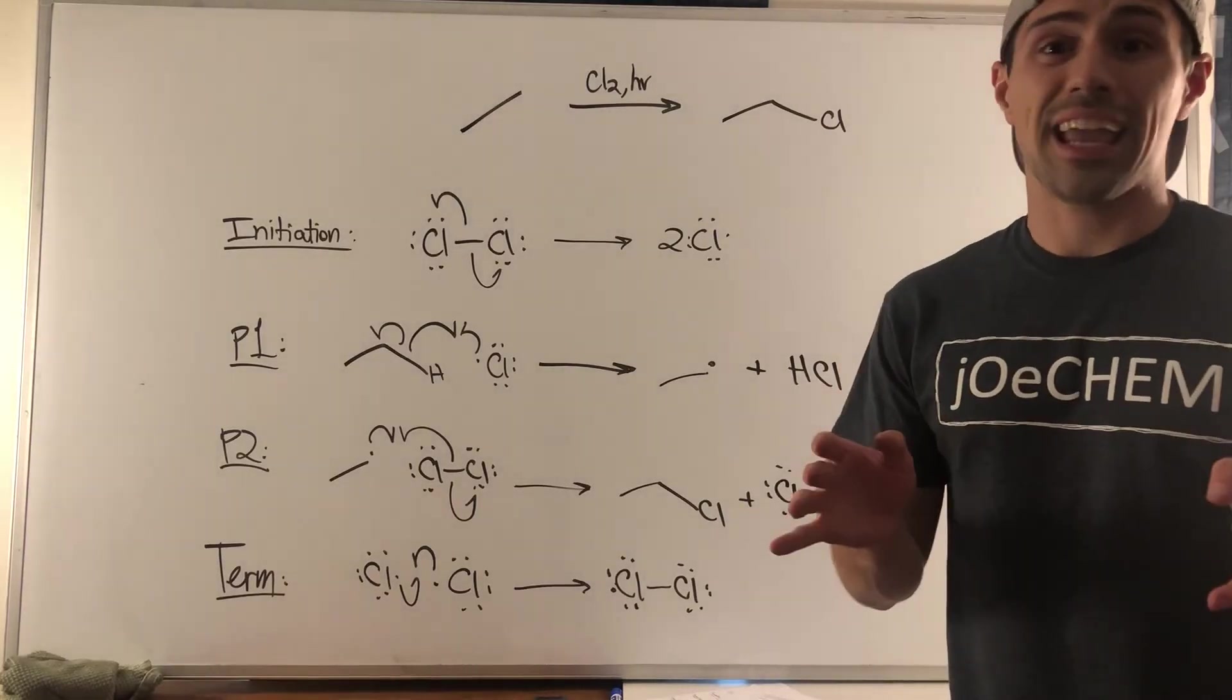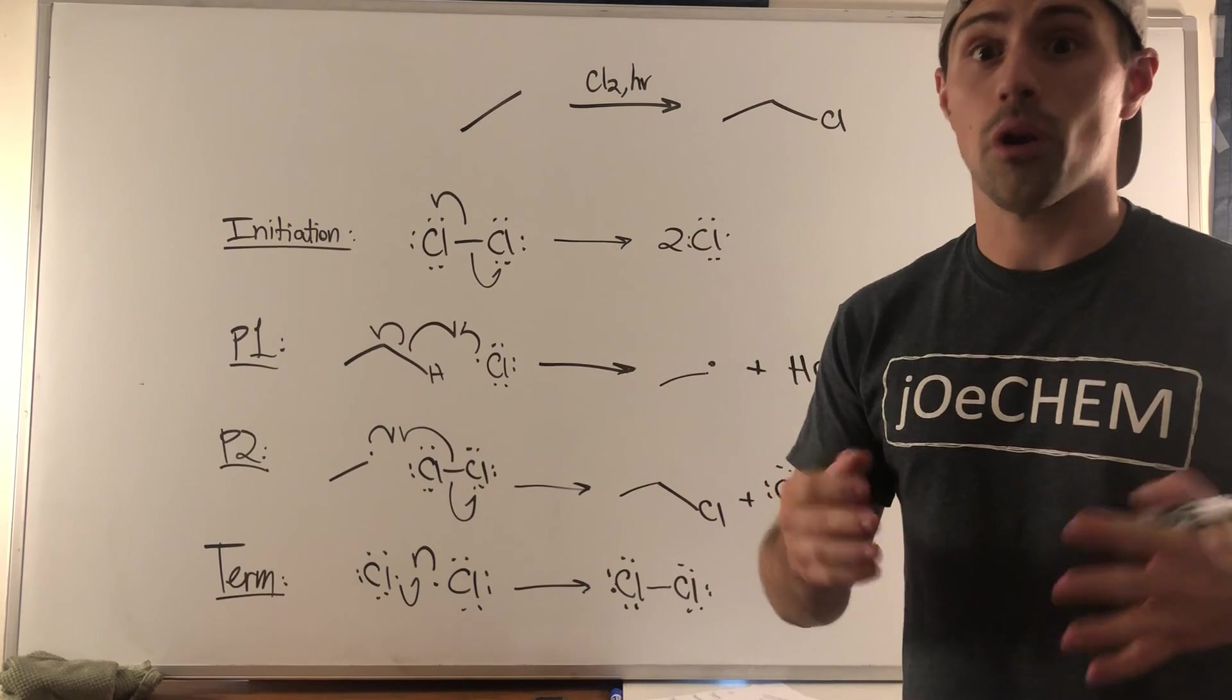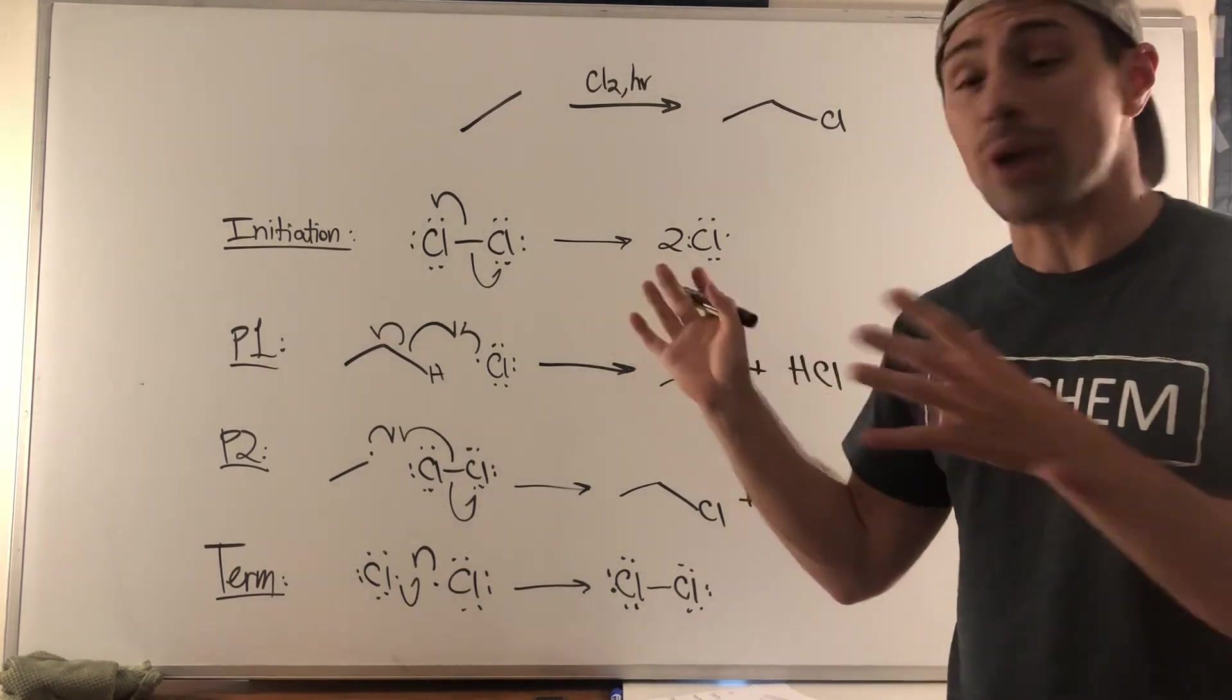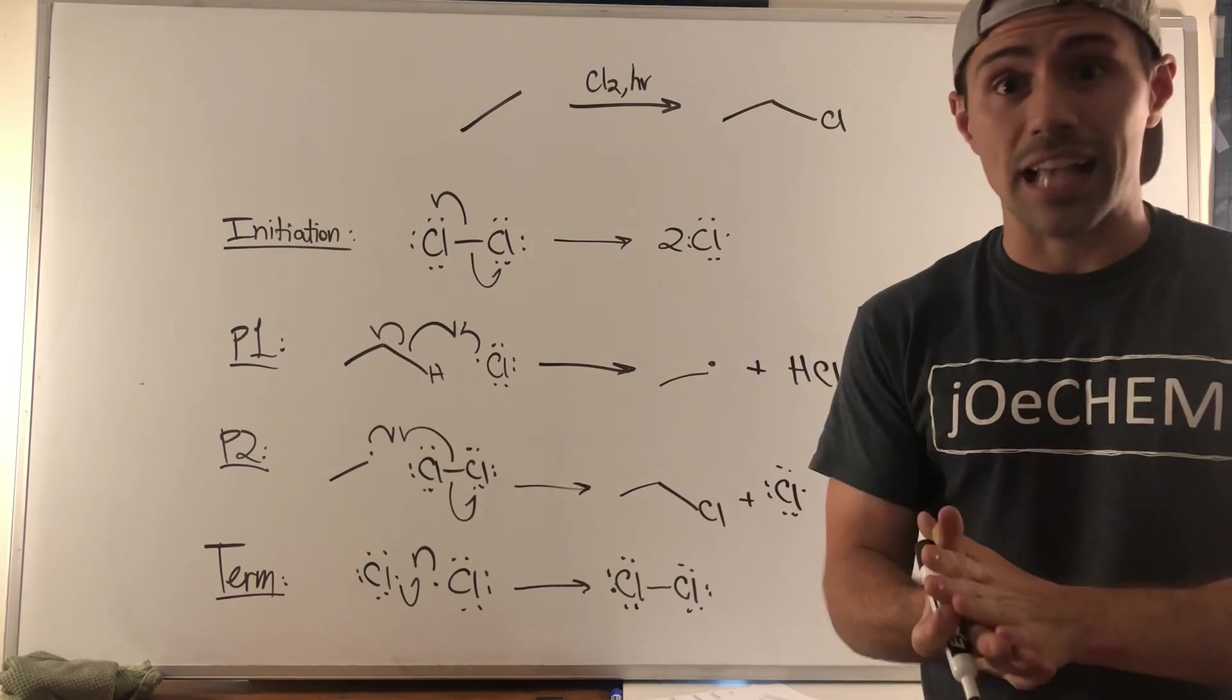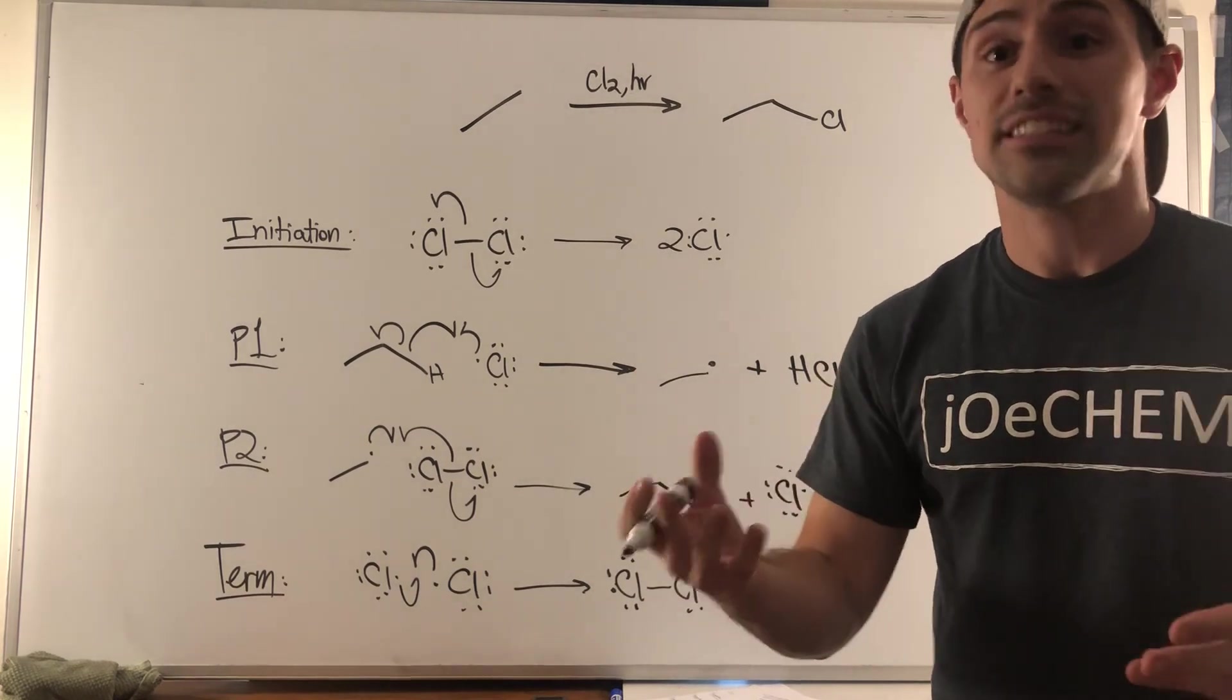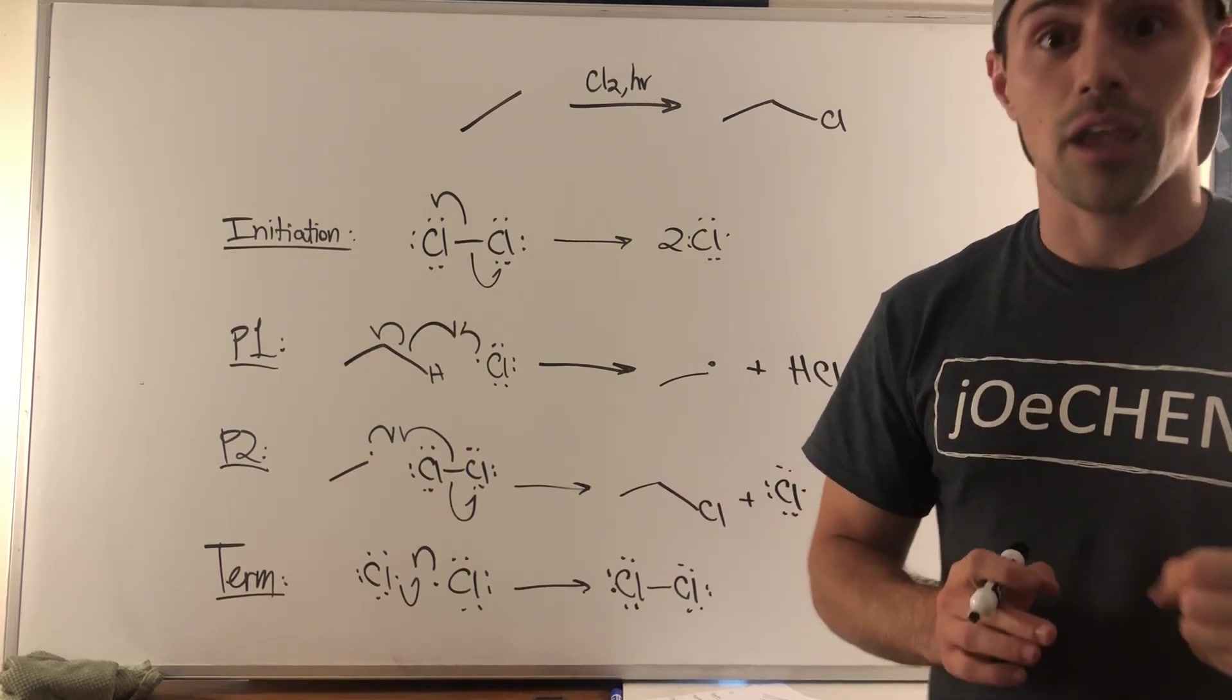On to two. Okay, gang. I know these videos can get long and I know that this mechanism is already in Joe Kim videos. So I'm not going to redraw it. Problem two is just draw the mechanism for this free radical chlorination. And this is meant just to be practice. You will get asked this question on your first exam. It's not a question of if, it's when you have to face it. Do you know it? And if you put in the time, it's three points.